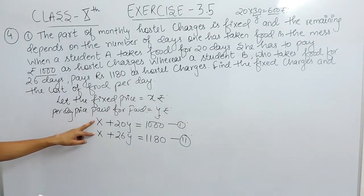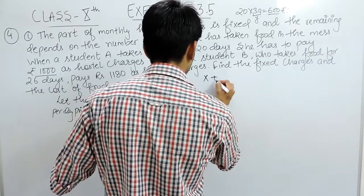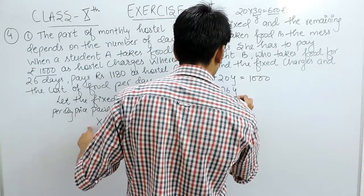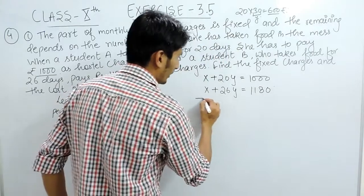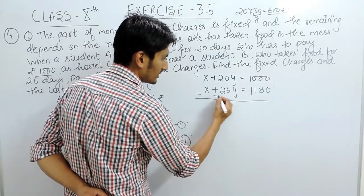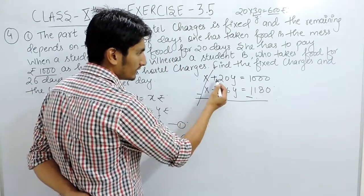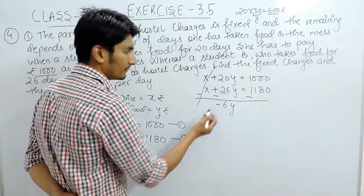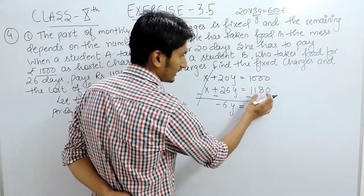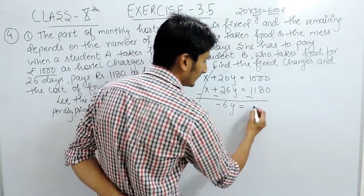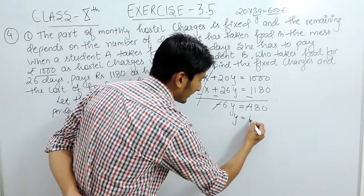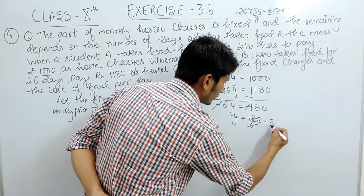Here, the coefficients of X are already equal. What we have to do is subtract these two equations. Equation 1: X + 20Y = 1000. Equation 2: X + 26Y = 1180. On subtracting, the X terms cancel out, and 20Y subtracted from 26Y gives −6Y, while 1000 subtracted from 1180 gives −180. The minus signs cancel, so 6Y = 180, giving Y = 180 ÷ 6 = Rs. 30.